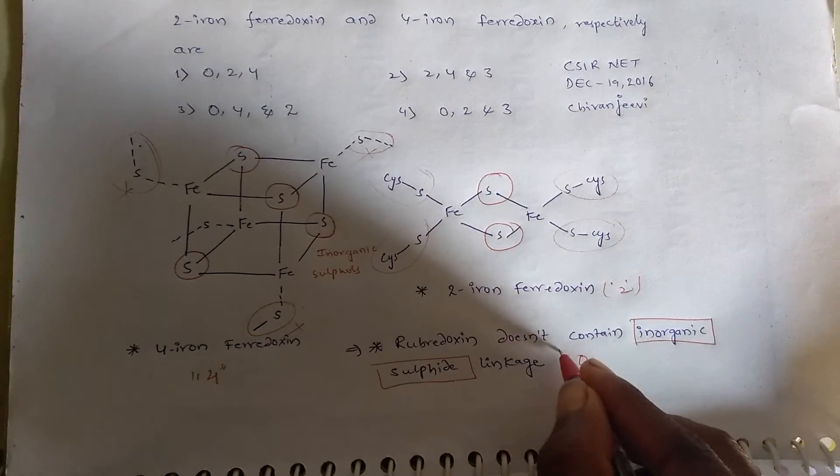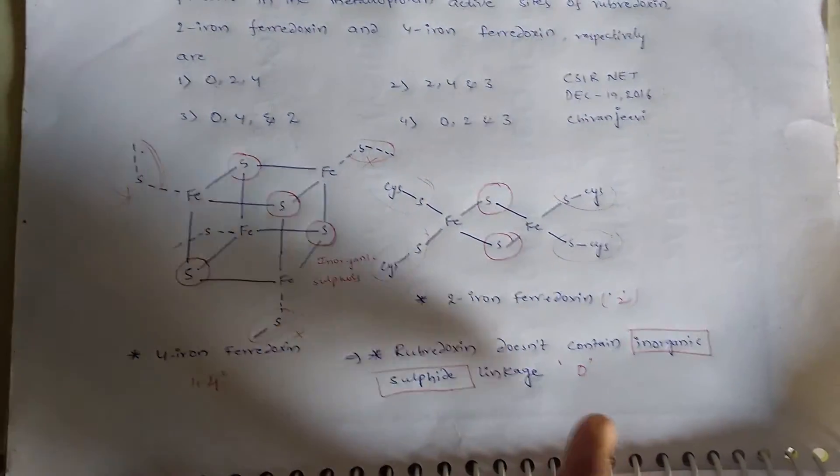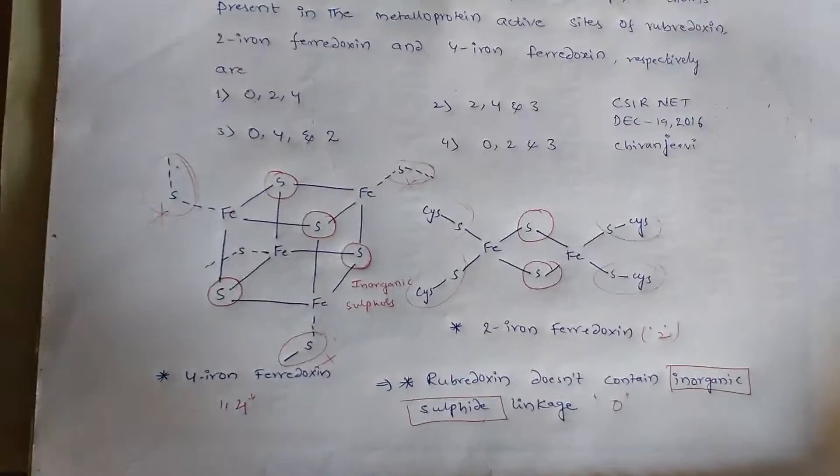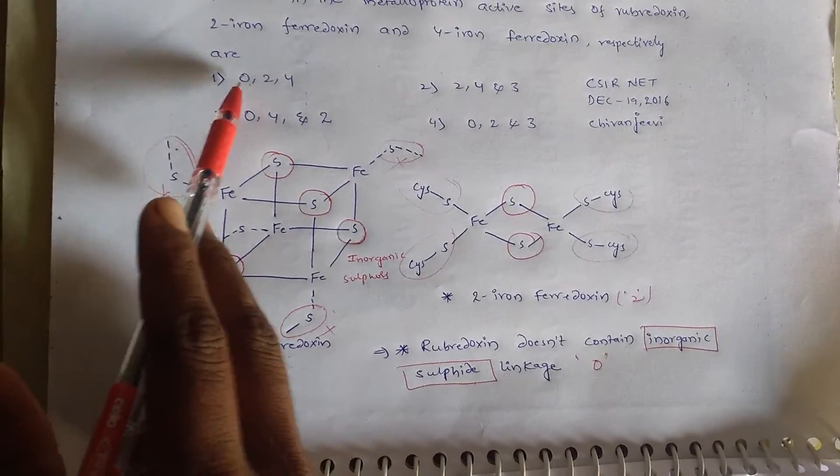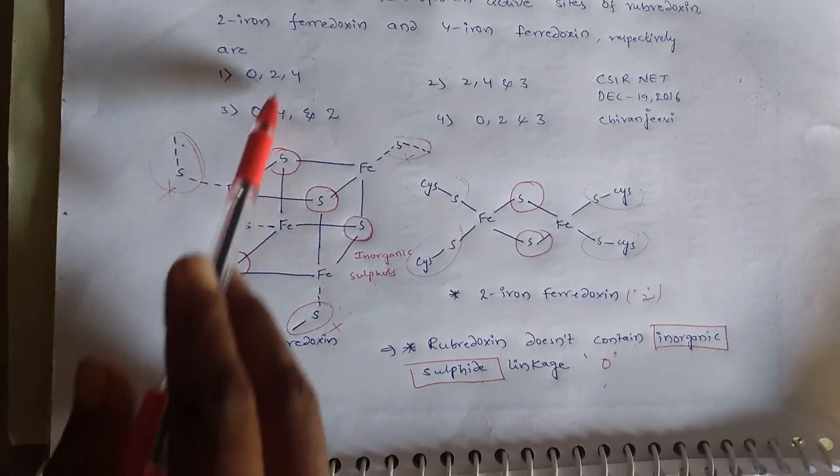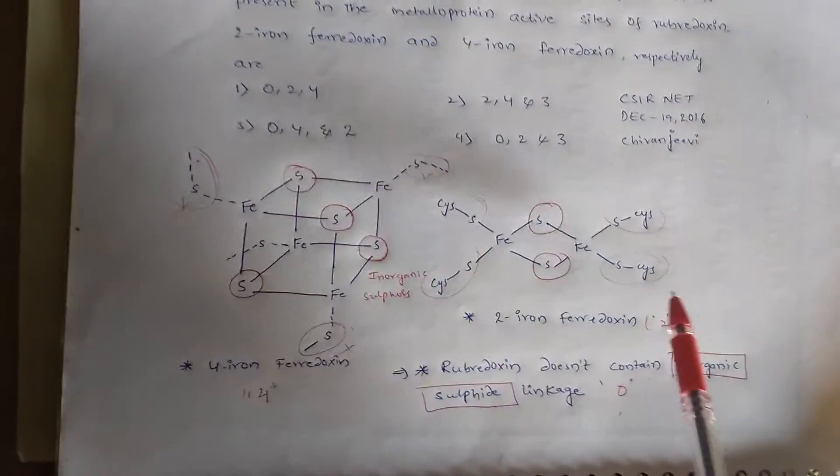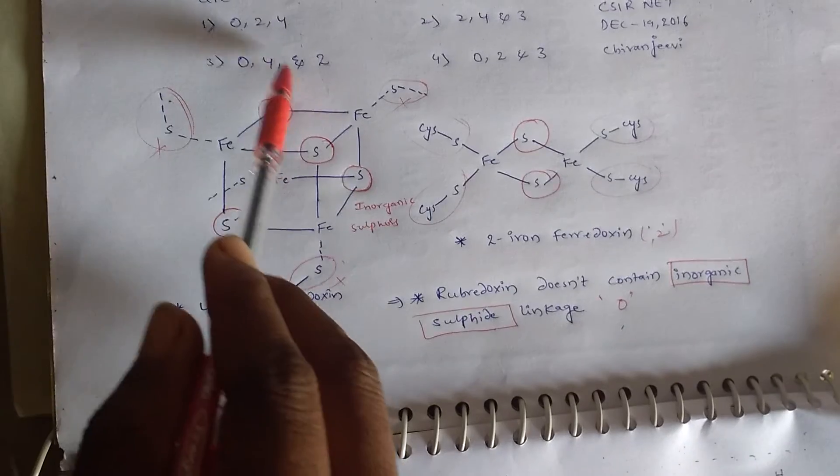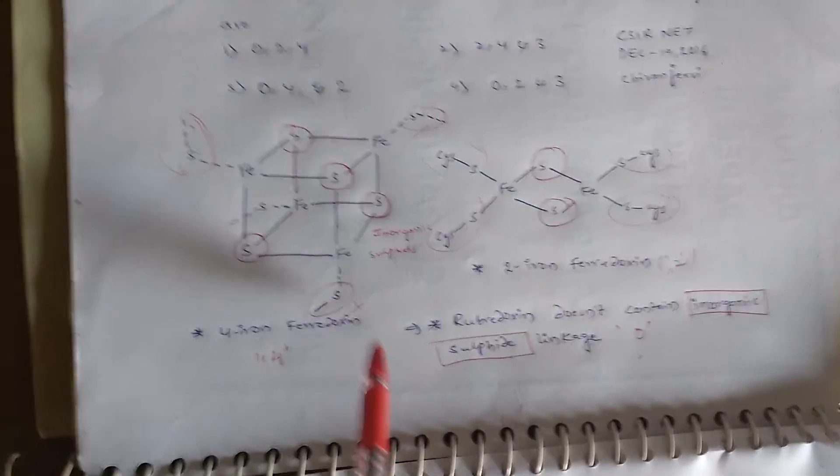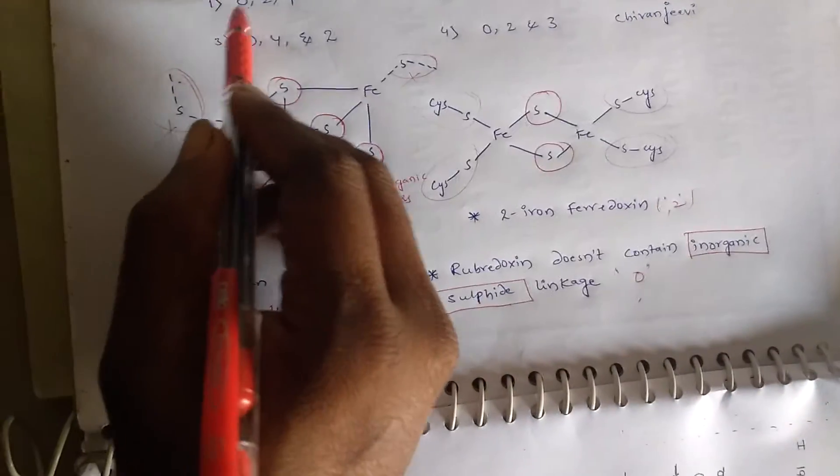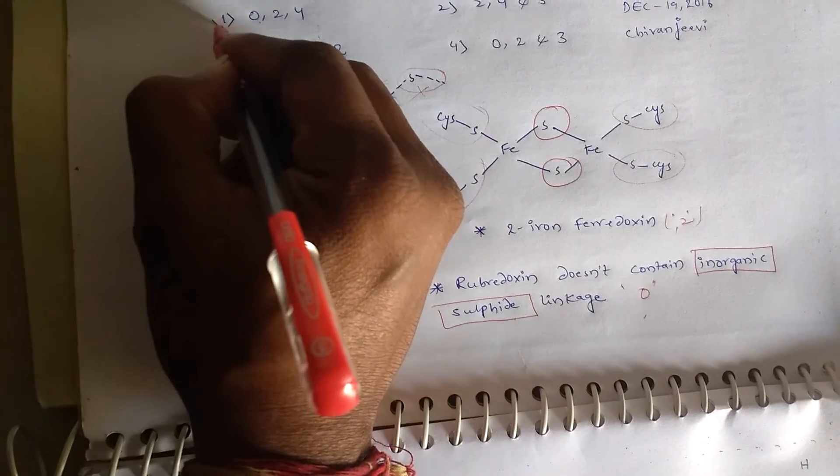That means it has 0 inorganic sulfur linkages. Now check the options: rubredoxin has 0, 2-iron ferredoxin has 2, 4-iron ferredoxin has 4. So 0, 2, 4—the correct option is 1.